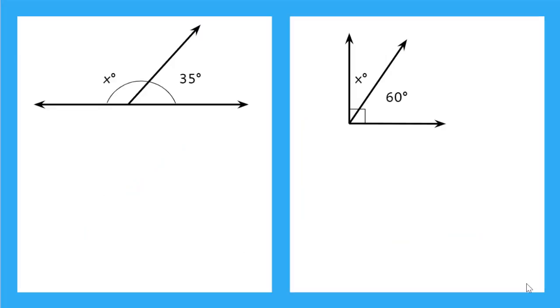Since we know all about angle pairs, we can find the missing angle in this supplementary angle and this complementary angle. Let's start with the supplementary angle. Since we know that this forms a straight line, we know that the sum of the angles is equal to 180 degrees. So we can say x degrees, my missing degree, plus 35 degrees is equal to 180 degrees.